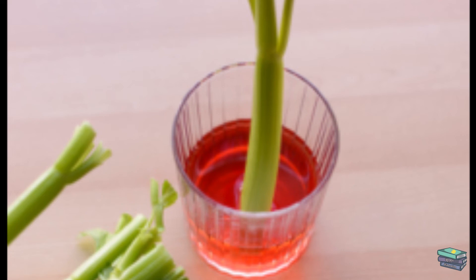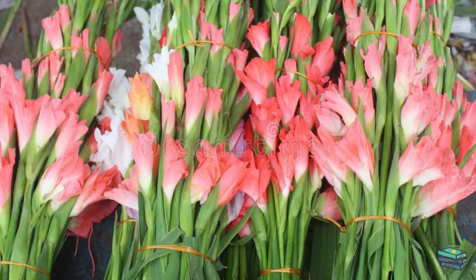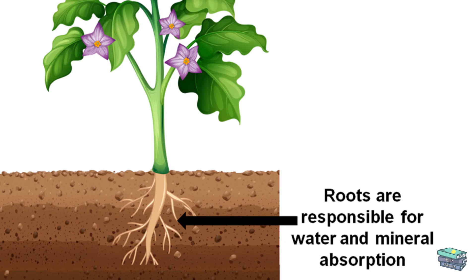Observe the flowers after a few hours. The flowers are no longer white — they are red in color. The stem of the tuberose flowers absorbed the red color that was in the water. How does water and minerals absorb from the stem?